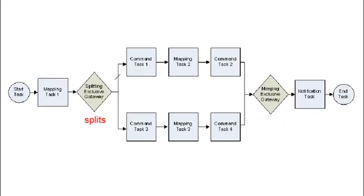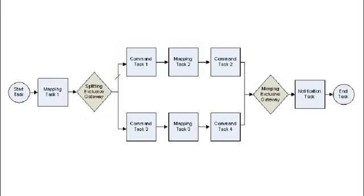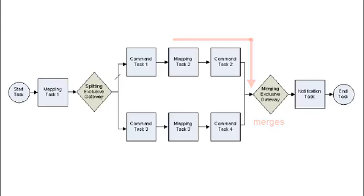When an exclusive gateway splits the workflow, the Data Integration Service makes a decision to take one of the outgoing branches. When an exclusive gateway merges the workflow, the Data Integration Service waits for one incoming branch to complete before triggering the outgoing branch.